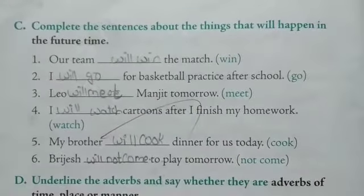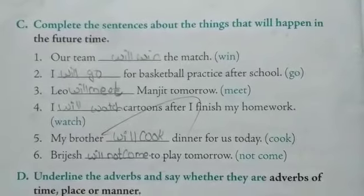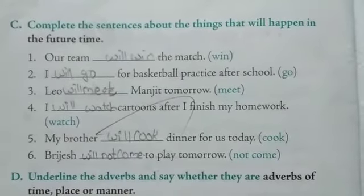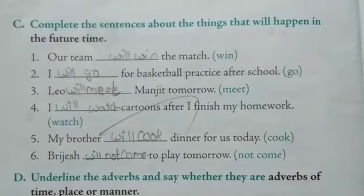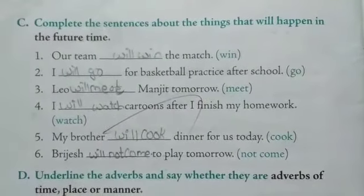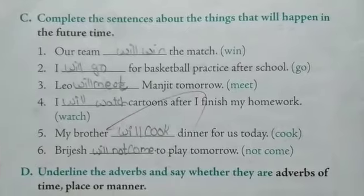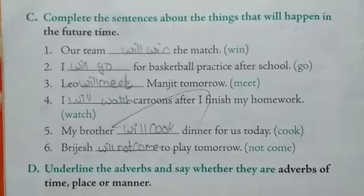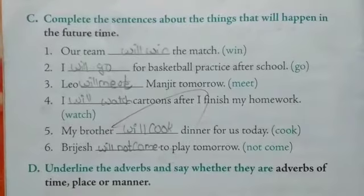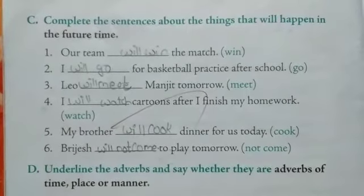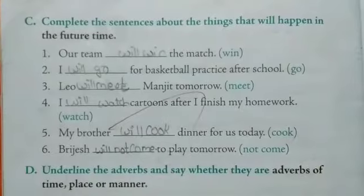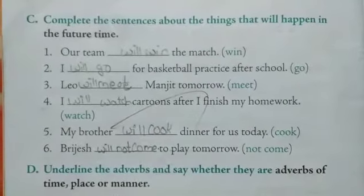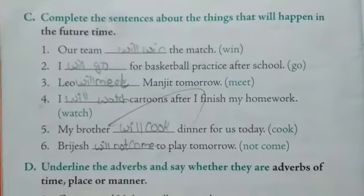Fifth one. My brother dash dinner for us today. The word is cook. Add will to the word. So we write it as: my brother will cook dinner for us today. So, who will cook? Brother will cook dinner for us today.